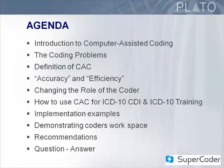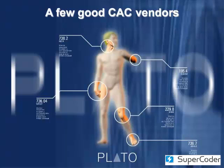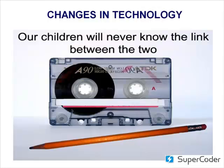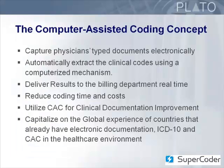The encoders of today are 25-year-old technology and have been very useful over the last 25 years, but with the advent of CAC, the encoders we have used in the past will no longer be needed. Coders today will live and work in a CAC world, and those encoders will only be used to scrub or validate the codes at the end of their CAC sessions. The whole computer-assisted coding concept is to capture physician-type documents electronically and then automatically extract the clinical codes using a computerized mechanism. We want to deliver these results from the CAC engine to the billing departments in real time, thus speeding up the coding process.